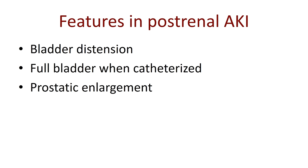In post-renal AKI, there are the features of AKI caused by acute reduction in kidney function, but we can also notice additional features characteristic of the post-renal aetiology. For example, there might be distension of the bladder because the flow of urine is blocked. A full bladder on catheterisation indicates blockage of normal urine flow. This is particularly likely in men with significant prostatic enlargement, caused either by benign prostatic hyperplasia or malignant prostate cancer.